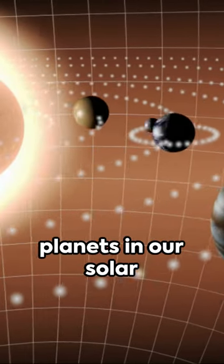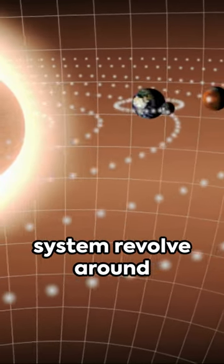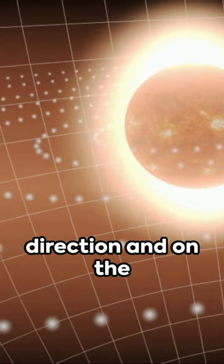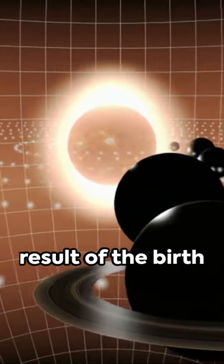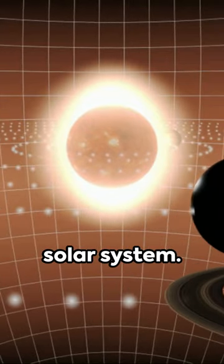Have you ever pondered why all the planets in our solar system revolve around the Sun in the same direction and on the same plane? This movement is a direct result of the birth and formation of our solar system.